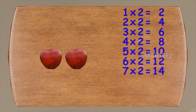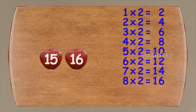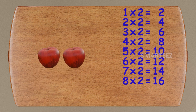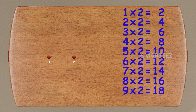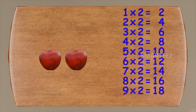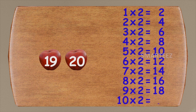Let's add two more. This will be fifteen and sixteen. Eight times two is sixteen. Let's add two more. This will be seventeen and eighteen. Nine times two is eighteen. Let's add two more. This will be nineteen and twenty. Ten times two is twenty. That's a lot of apples!